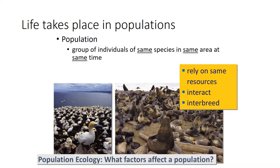Life takes place in populations. A population is a group of individuals of the same species in the same area at the same time. All of these individuals rely on the same resources, may interact with one another, and have the potential to interbreed. We can have separate populations of the same species — like bass in Lake Martin and bass in Lake Smith. Those two populations are never going to come together because they live in different river systems, so their genes cannot mix. They are separate populations because they don't interbreed, even though they are the same species.